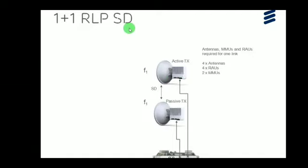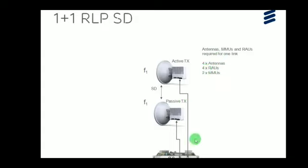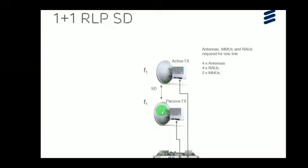For 1+1 space diversity, the requirements for 1 link are: 4 antennas (2 at near end, 2 at far end), 4 radios, and 2 MMUs at near and far end. Both antennas must be separated by a distance as per the space diversity concept. The active transmitter and passive transmitter are each identified at the near end, mirrored at the far end.